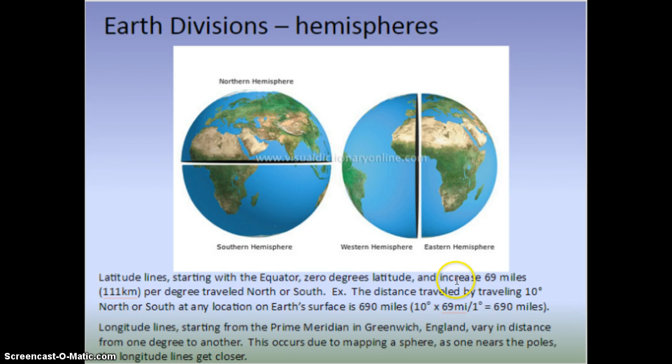Latitude, as we move north-south, it's 69 miles, or 111 kilometers, per degree traveled north or south. It does not matter. And here's an example. If I travel 10 degrees, it's 10 degrees times 69 miles per degree for 690 miles.